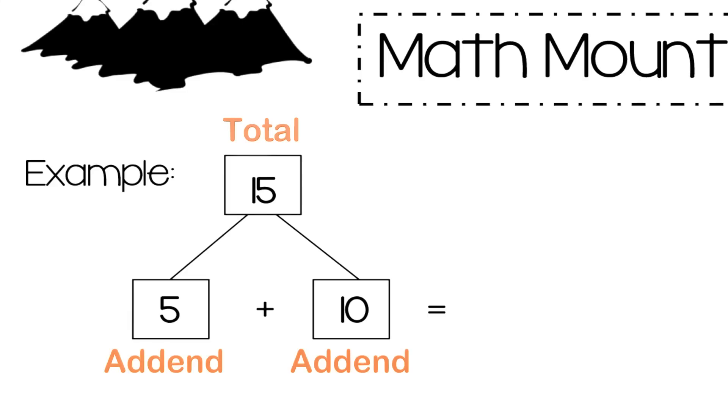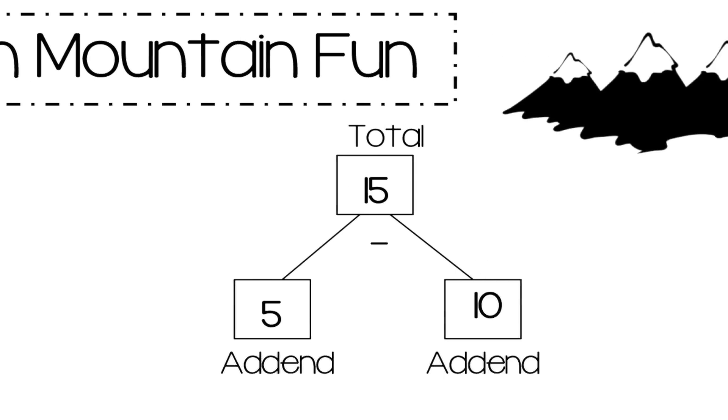What if we tried subtraction? Here we have the same Math Mountain, except we are subtracting. We start with the total, which is 15, and subtract one side. Let's use the addend on the right, the number 10.